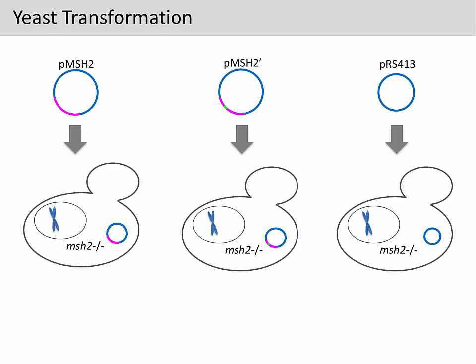The yeast strain we used here is an MSH2 mutant. Because MSH2 is required for mismatch repair, the mutation rate in this yeast strain is usually very high. If you introduce an empty vector into the yeast strain, this is not supposed to do anything to the host yeast. Therefore, the mutation rate will remain high.